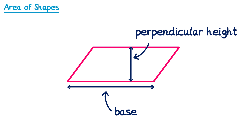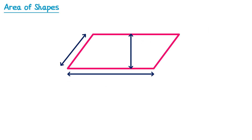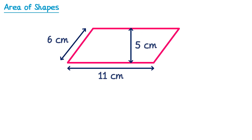You need to be aware that parallelograms can also have a slant height. We don't need that to find the area, but it may be given in the question. So in this example, we just need to multiply the base, which is 11, by the perpendicular height, which is 5. Notice how we didn't need the 6cm slant height at all. And 11 times 5 is 55, so the answer is 55cm squared.